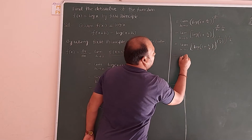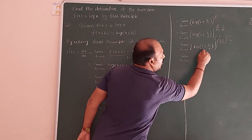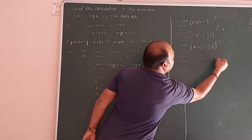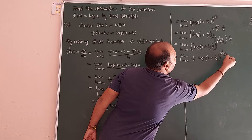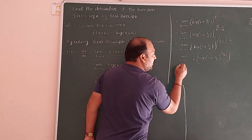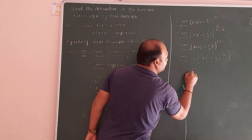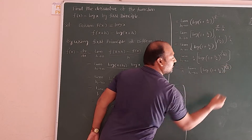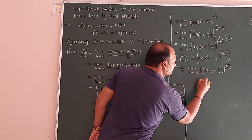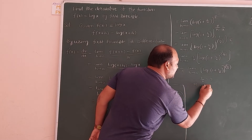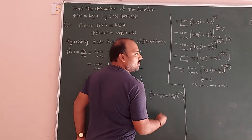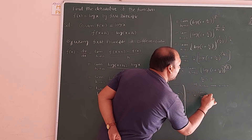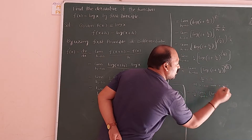Taking the (1/x) power outside using the formula log(a^m) = m·log(a), we get (1/x) · limit h→0 of log(1 + h/x)^(1/(h/x)). Now let y = h/x; as h→0, y→0 as well. So wherever h/x appears we substitute y, giving: (1/x) · limit y→0 of log(1 + y)^(1/y).